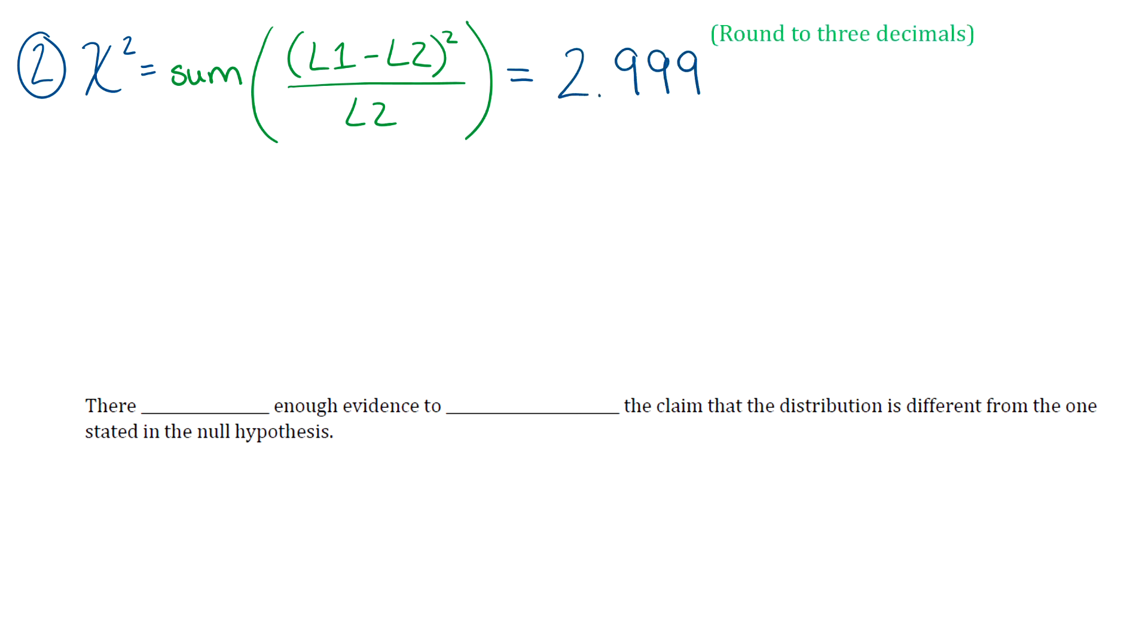And then you should get, it's a long number, but go ahead and round your chi-squared statistic to three decimal places. So you should get 2.999.